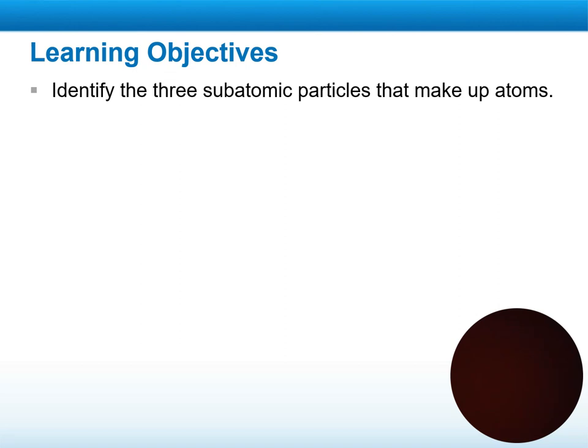Now, by the end of this lesson, we should be able to identify the component of an atom and how the atoms can be bound to each other.